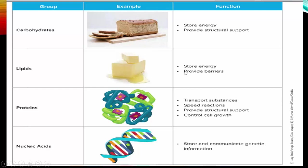Lipids store long-term energy and provide cellular barriers because they're hydrophobic. Proteins are made of carbon, hydrogen, and oxygen with one extra thing — nitrogen. They transport substances in and out of cells, speed up reactions as enzymes, provide structural support, and control cell growth. Nucleic acids are made of carbon, hydrogen, oxygen, nitrogen, and one additional thing — phosphorus — and they store and communicate genetic information as DNA and RNA. Everything that makes up who you are — the genes in your body — those are the nucleic acids. That's it for macromolecules; bring your notes and questions to class.